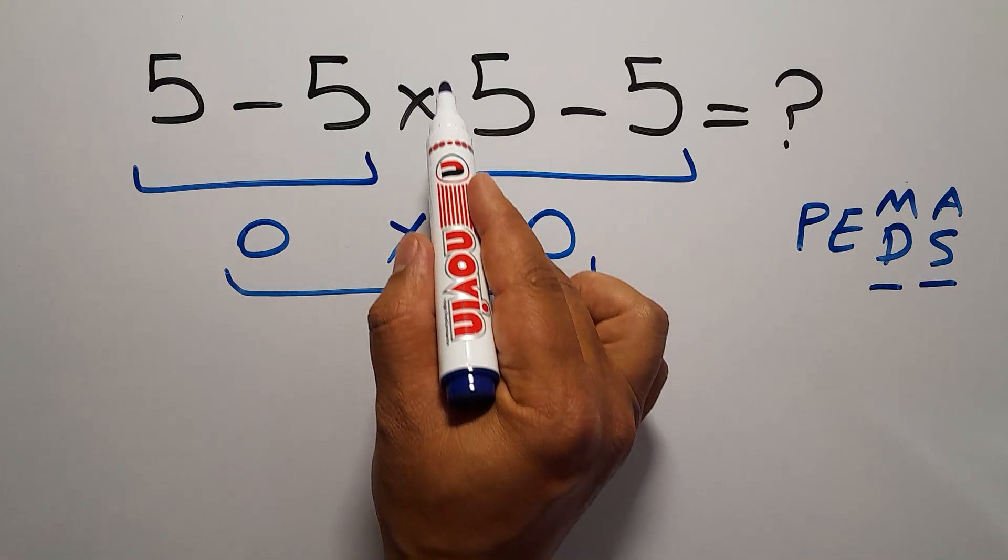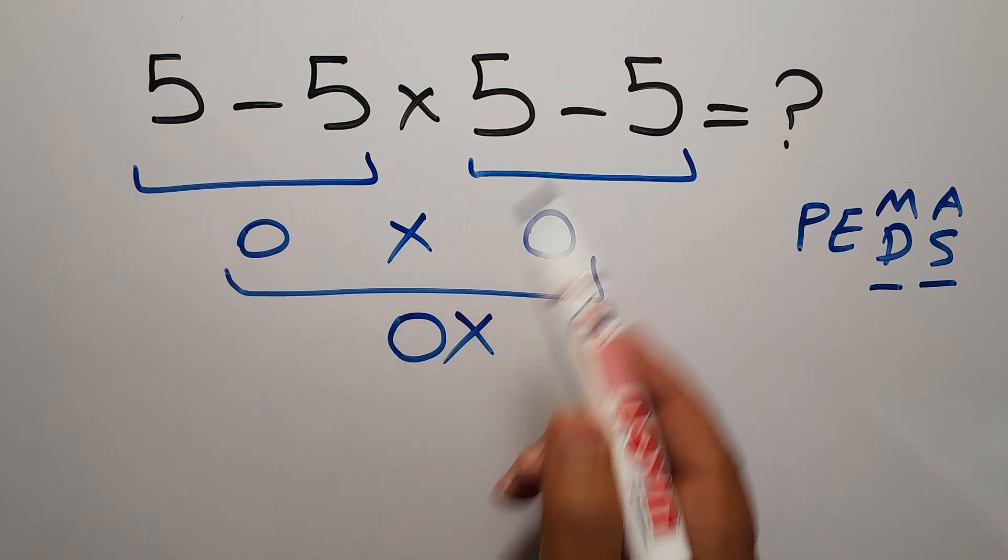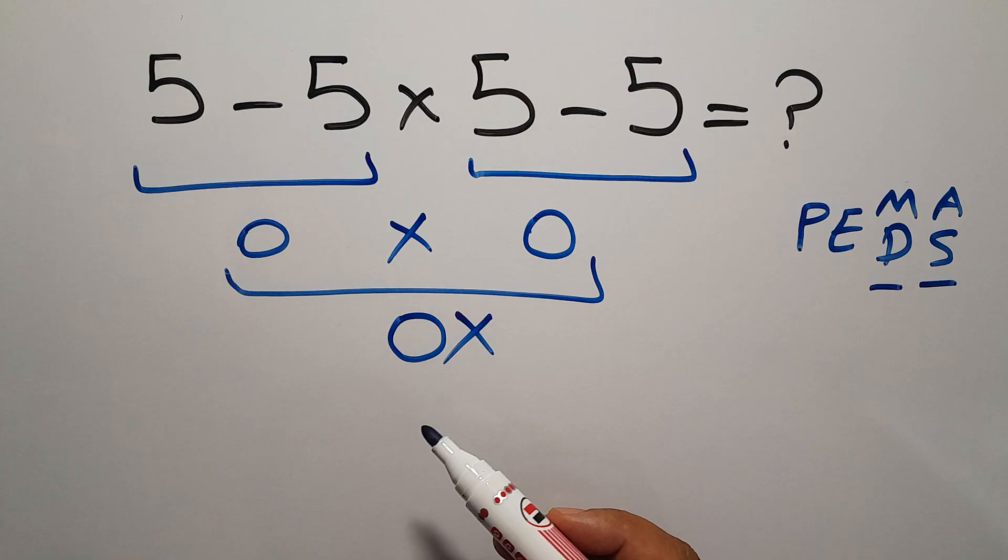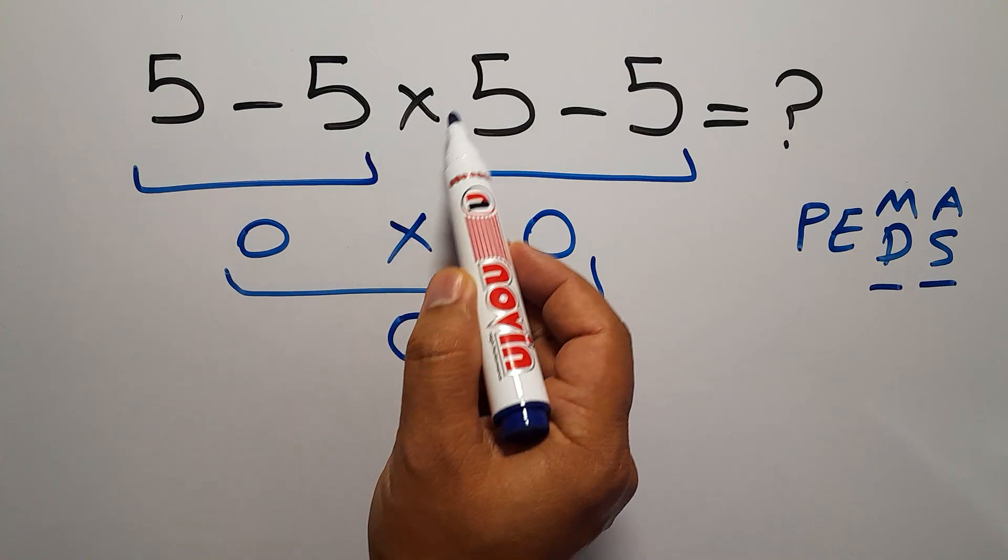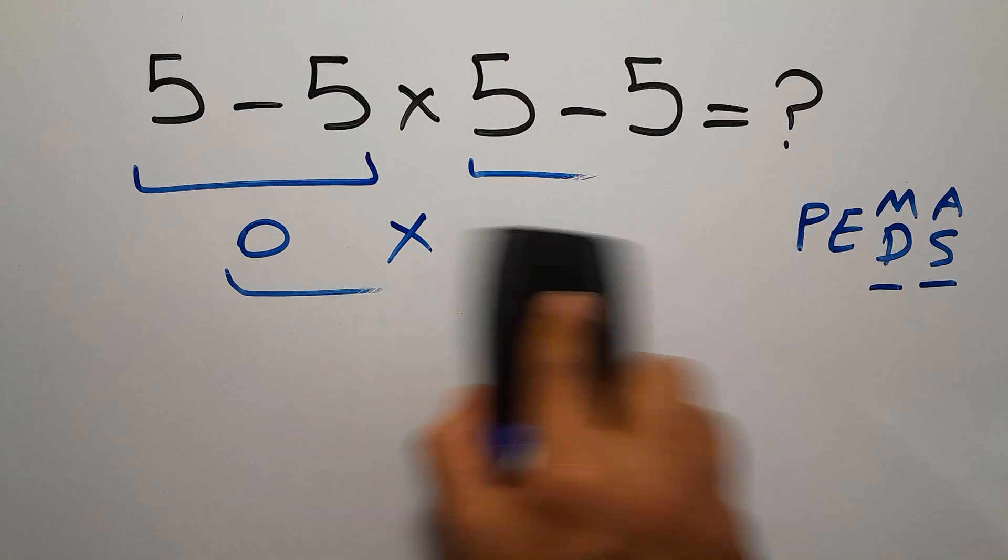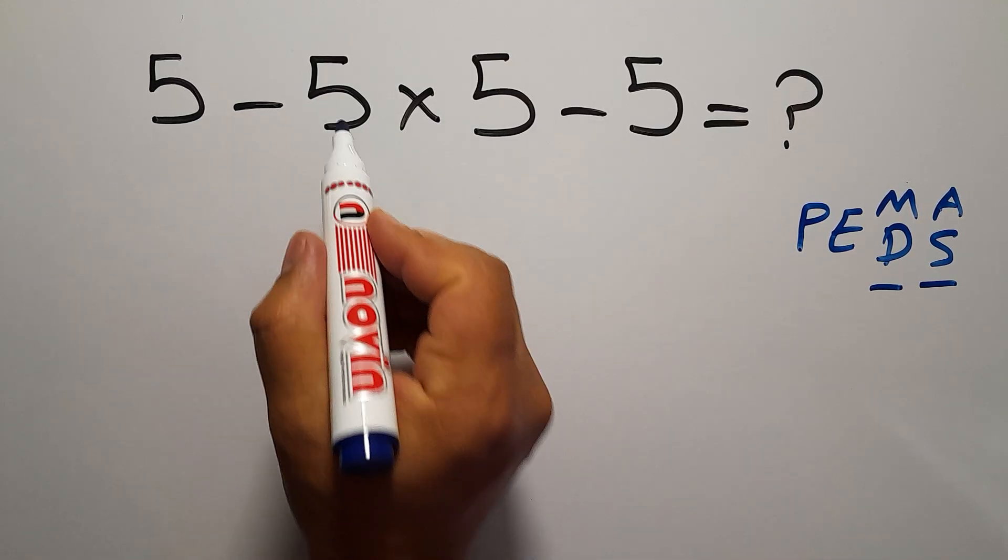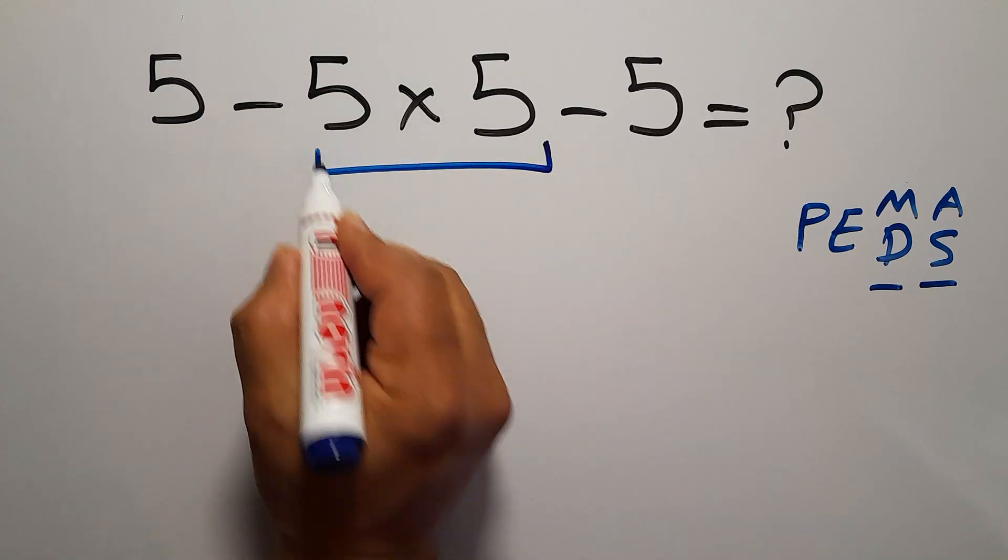So first we have to do this multiplication, not this subtraction or this subtraction. First we handle this multiplication. 5 times 5 gives us 25.